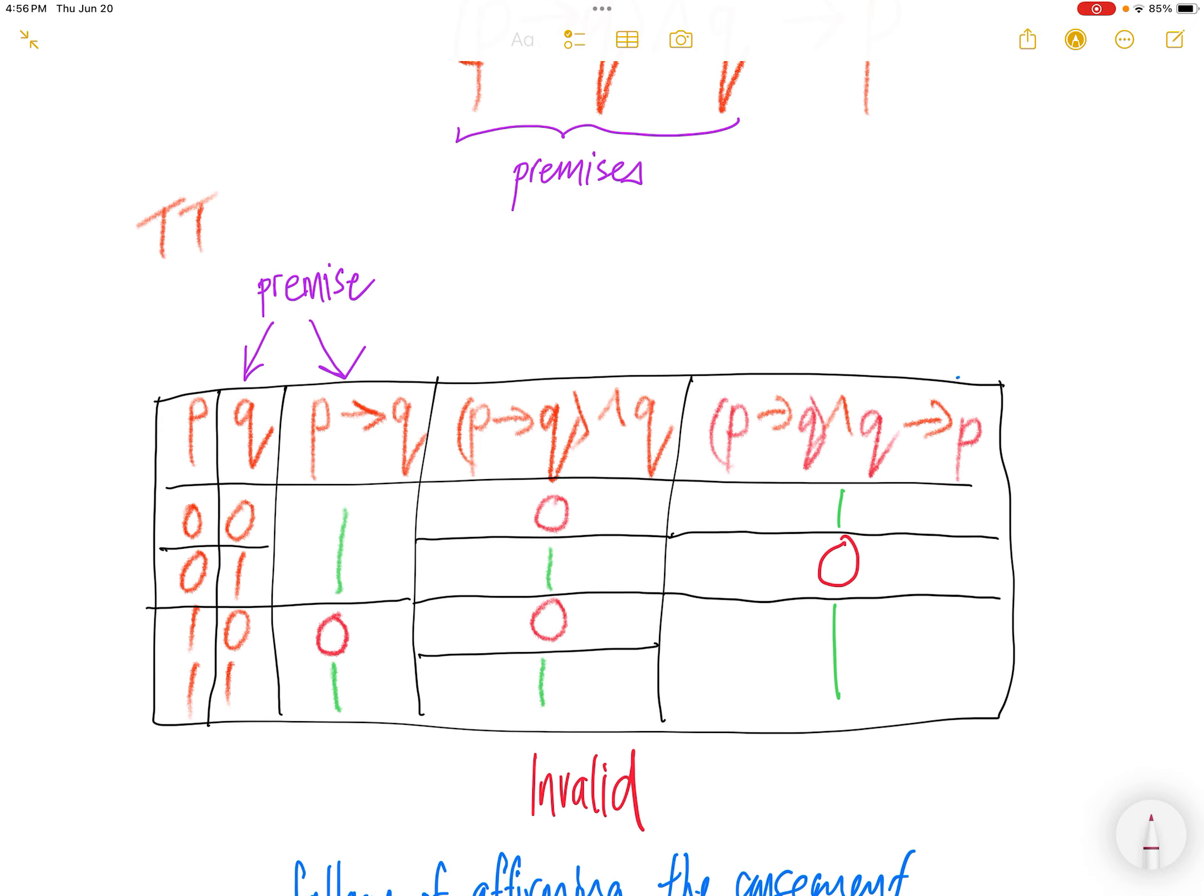First, we are going to draw up the truth table. We have P and Q, two logic variables. Each one will take two possible inputs, zero for false, one for true. Since there are two variables, we have two to the power of two, which is four possible input combinations: zero zero, zero one, one zero, and one one.